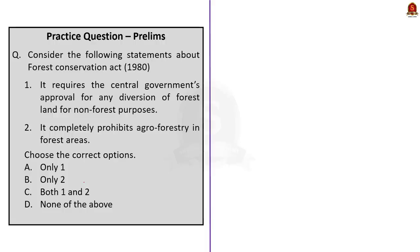The last question is about the Forest Conservation Act 1980, with two statements. Statement one says it requires central government approval for any diversion of forest land for non-forest purposes — this is correct. Statement two says it completely prohibits agroforestry in forest areas — this is incorrect, as it is an extreme statement. Agroforestry is not completely banned; it requires central government approval to be performed in forest areas. So statement one is correct and statement two is incorrect, making the correct answer option A: only one.